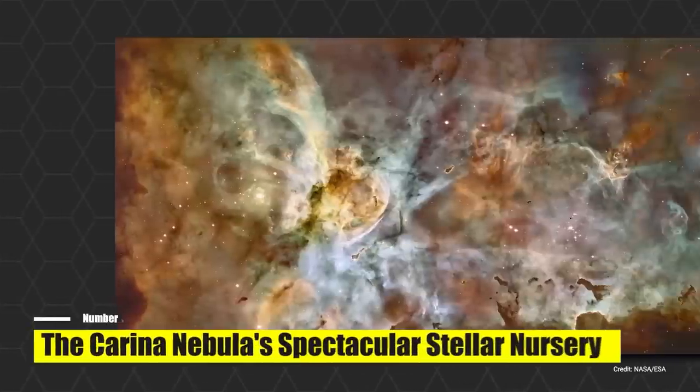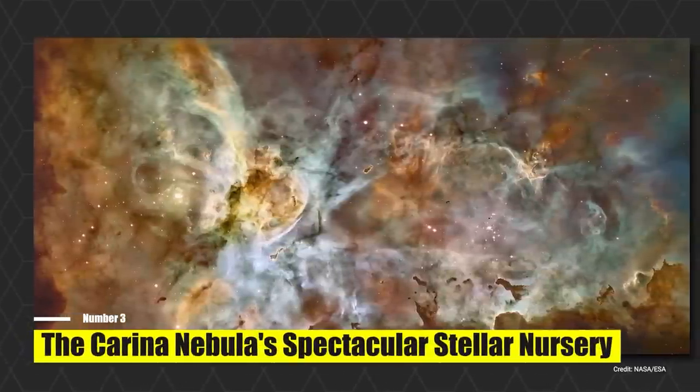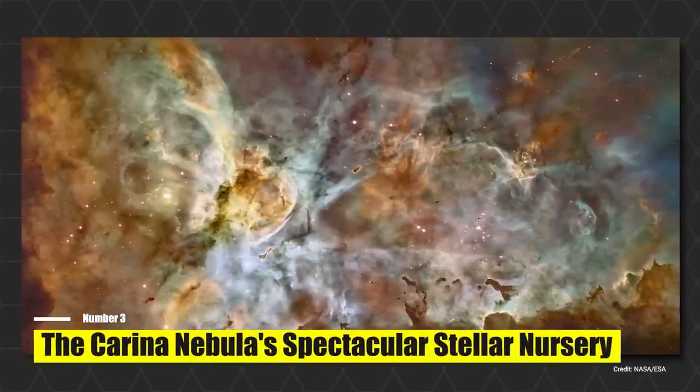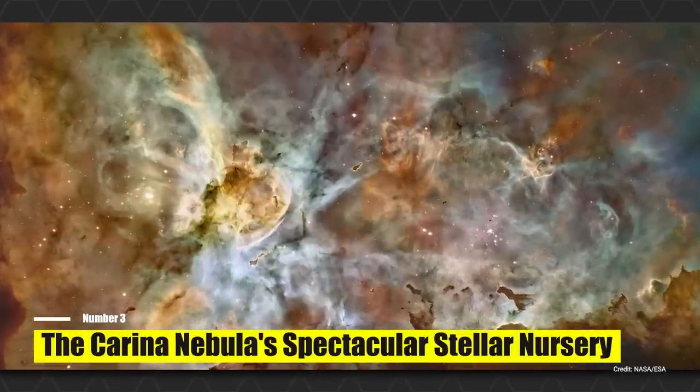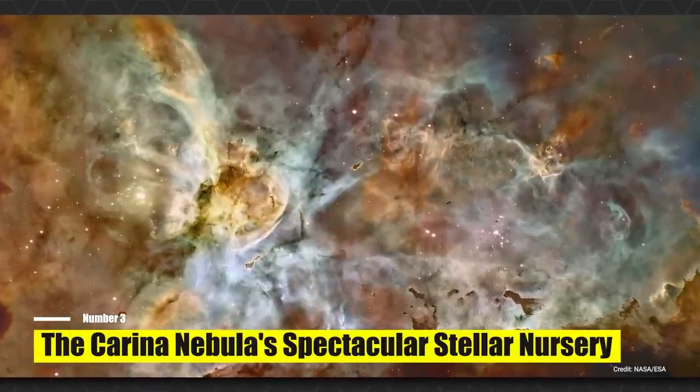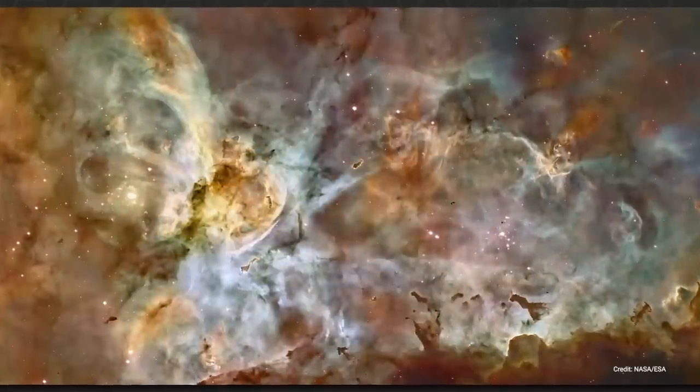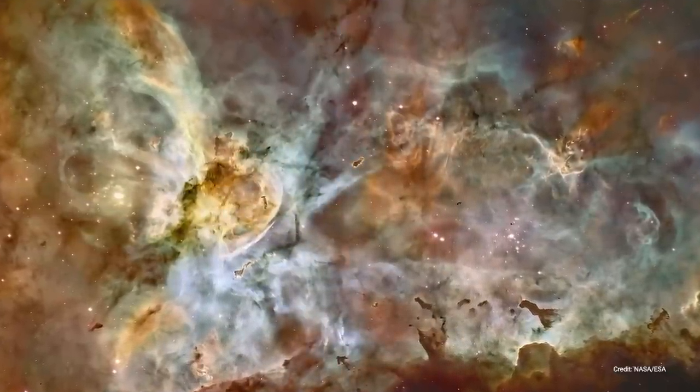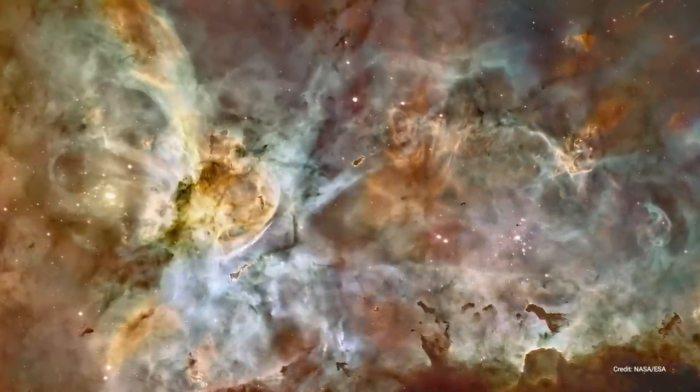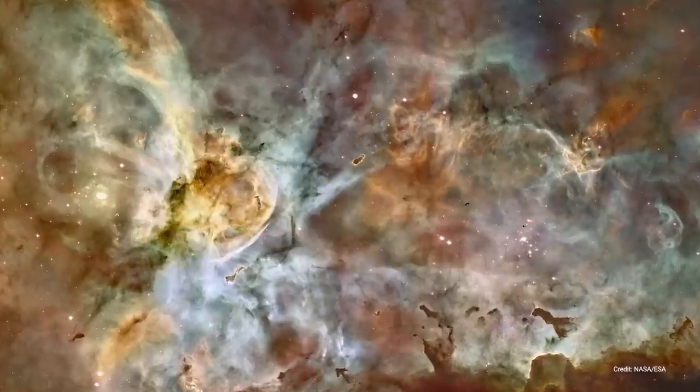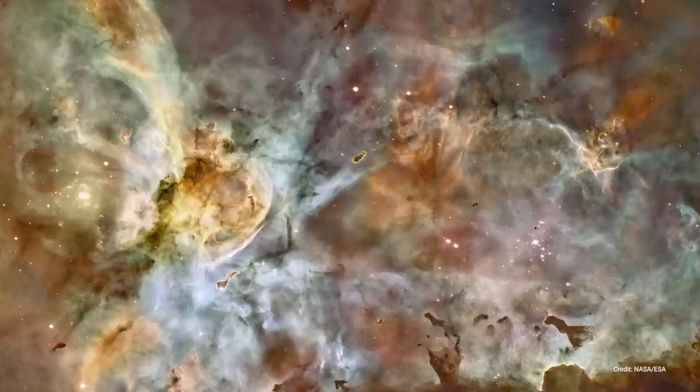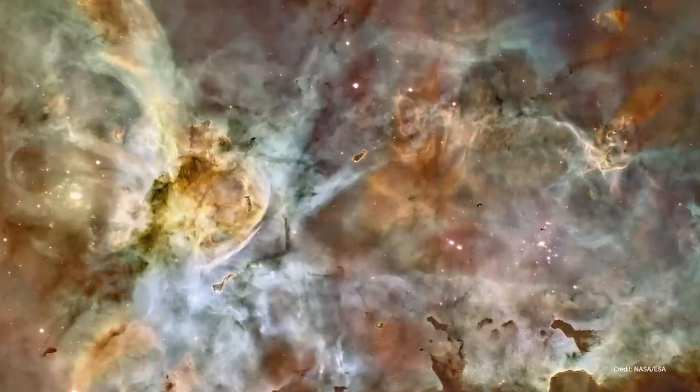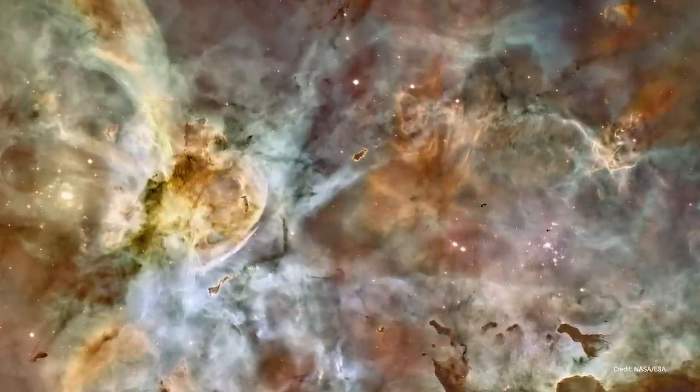Number 3. The Carina Nebula's Spectacular Stellar Nursery. The James Webb Space Telescope offers us an unparalleled view of the Carina Nebula, a place where stars are born amidst an otherworldly landscape. This celestial terrain is shaped by the force of winds and intense ultraviolet radiation emanating from the colossal stars within this fiery domain. These powerful stars are gradually consuming the remaining material from the giant cloud that gave birth to them.